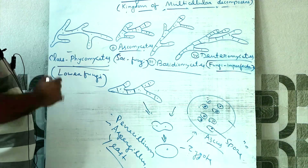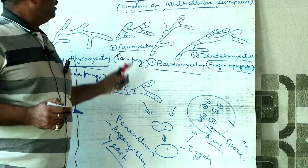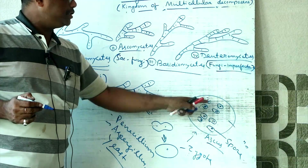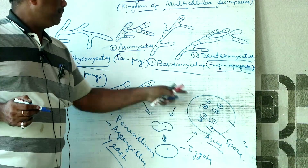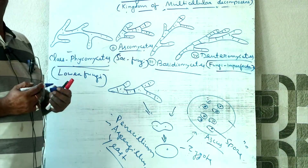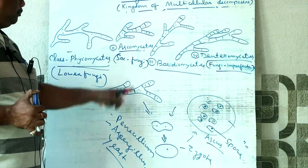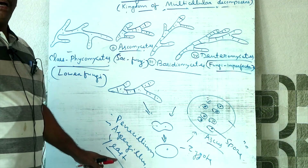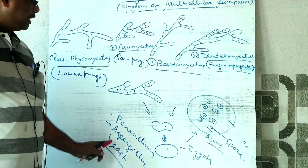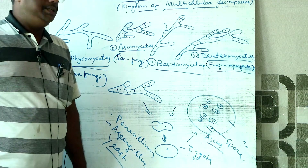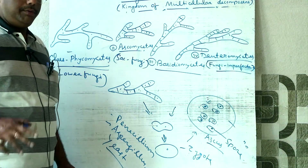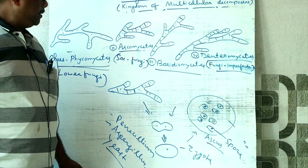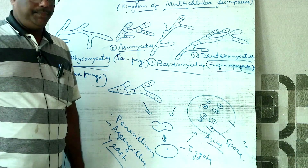The mycelium is septate in this higher fungi group. The zygote enlarges into a sac-like structure — the ascus. Common examples of Ascomycetes include Aspergillus, yeast (Saccharomyces), known as the sugar fungi, all placed in the class Ascomycetes.